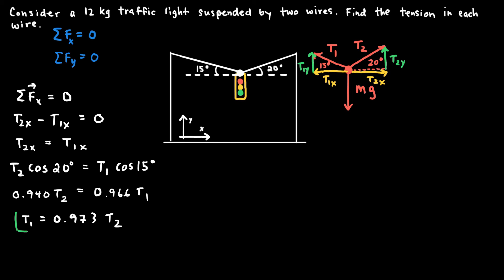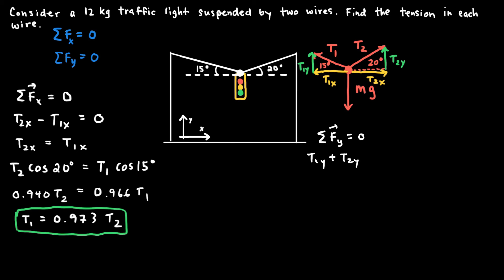This equation relating T1 and T2 is important: if we find one tension numerically, we can plug it in to find the other. The X-direction equation gives one relationship; the Y-direction equation will give another. Together they let us solve for both unknowns. Now writing the Y-direction equation: net force in Y equals zero, so T1Y plus T2Y minus mg equals zero, since T1Y and T2Y both point upward.